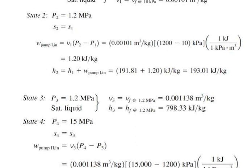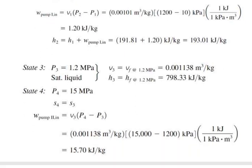For state 7 at P7 = 10 kPa, find the dryness fraction: X7 = (S5 − Sf) / Sfg = (6.6796 − 0.6490) / 7.4996 = 0.8041. Then H7 = Hf + X7 × Hfg = 191.81 + 0.8041 × 2392.1 = 2115.3 kJ/kg. Then find the mass fraction of steam bled using the energy balance on the open feed water heater: m×H6 + (1−m)×H2 = 1×H3.